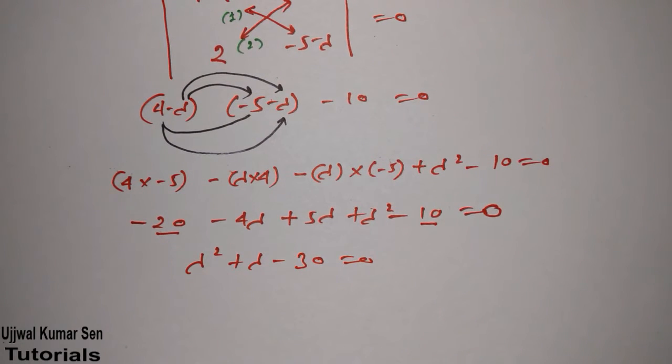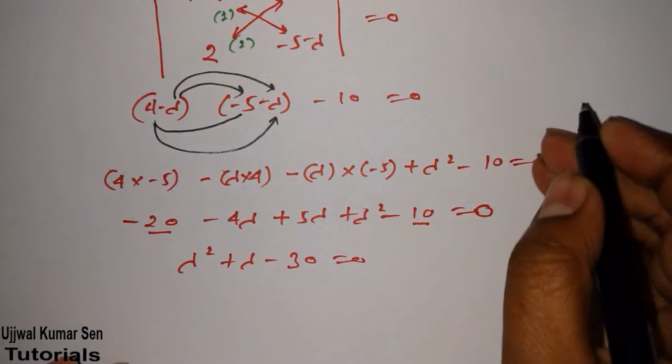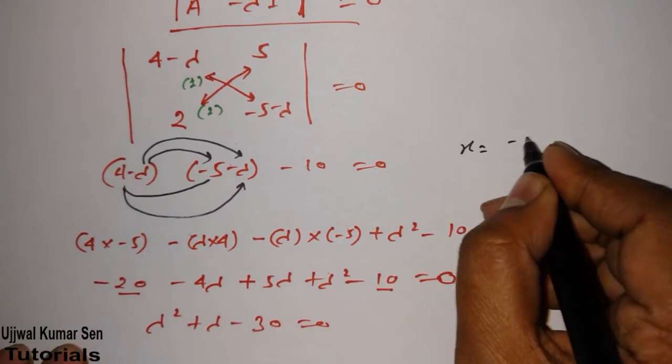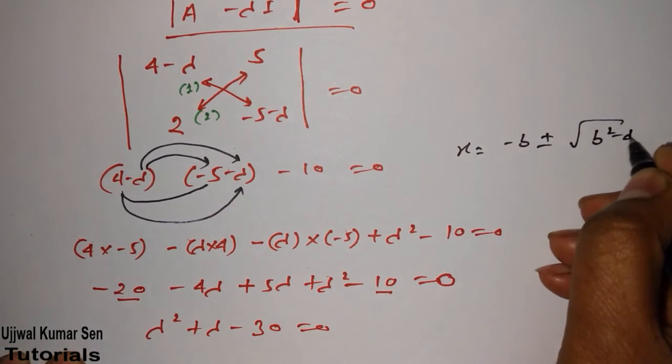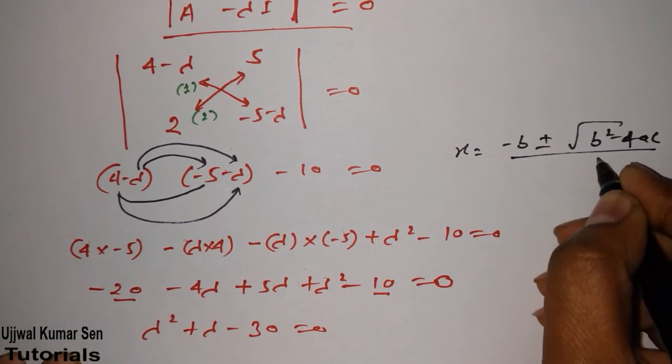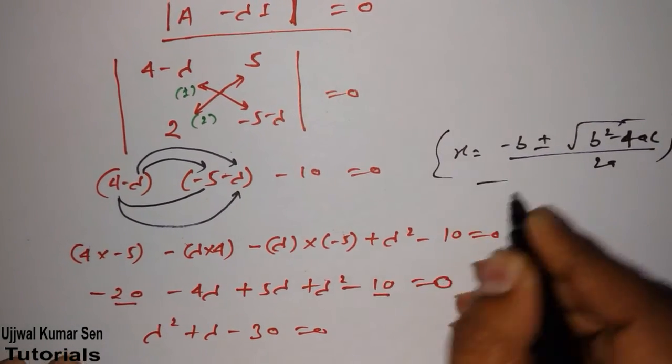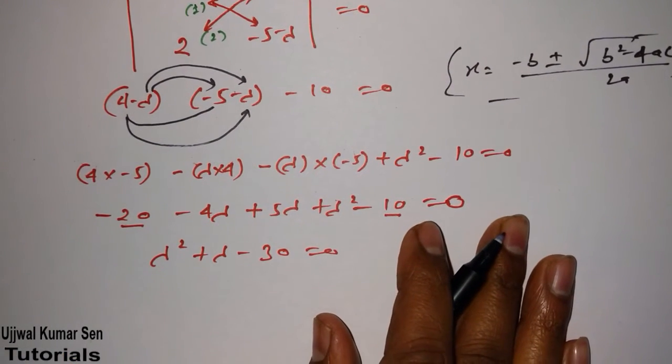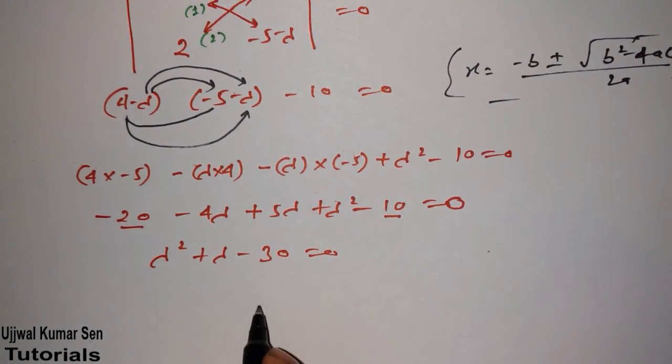Now we have to find out the value of lambda. We can also use that quadratic equation: x equals minus b plus minus root under b square minus 4ac by 2a. But that equation will create a little bit complication because this is a simple equation.